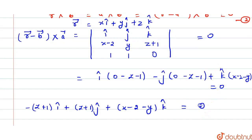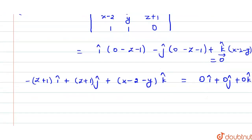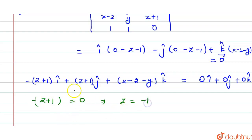Writing 0 as 0 i cap plus 0 j cap plus 0 k cap, and comparing components: from i cap, minus (z plus 1) equals 0, which implies z equals minus 1. From k cap, x minus 2 minus y equals 0, which implies x equals y plus 2. This is equation 3.